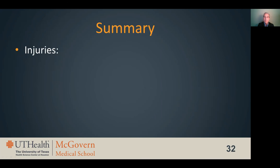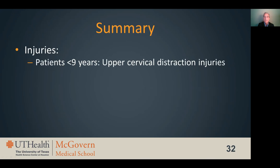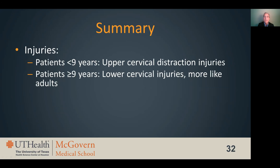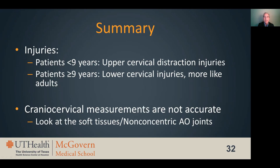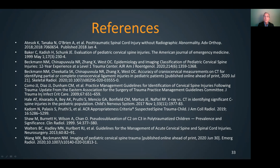In summary, in patients under the age of nine, injuries tend to be distraction injuries of the upper cervical spine. In patients nine years and older, injuries are more often in the subaxial spine with fracture patterns more like adults. Remember, cranial cervical measurements are not very accurate for identifying upper cervical injuries, so be sure to look for subjective soft tissue findings and non-concentric atlantooccipital joints, as these may be the only findings of cervical injury on initial imaging. Thank you for your time.